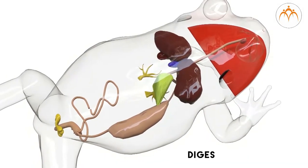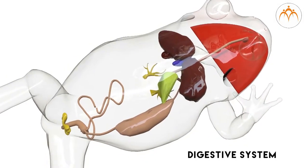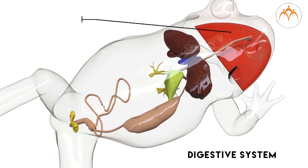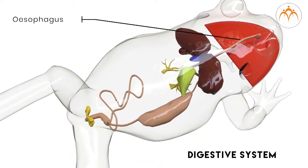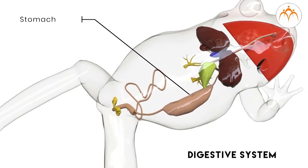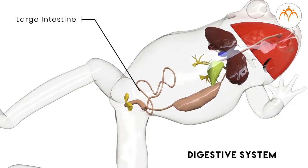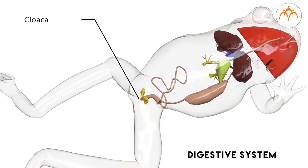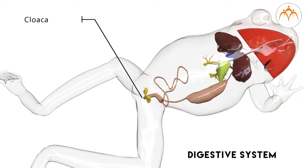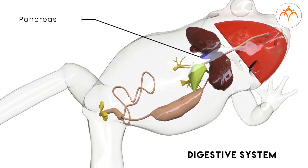We will first see various organs of the digestive system starting from the mouth. The major organs are mouth, pharynx, esophagus, stomach, small intestine, large intestine, and cloaca. There are accessory glands namely liver, pancreas, and gall bladder. The digestive system digests food eaten by the frog and then the digested food is absorbed into the blood. Now, after observing various organs, I will tell you a little more about each one of them.